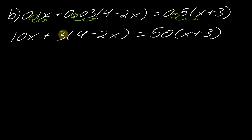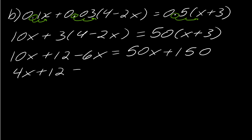So now I've got to distribute here and here, so I'll go ahead and do that. So this is 10x plus 12 minus 6x equals 50x plus 150. Now I can collect my like terms. So this is going to be, so 10x minus 6x is 4x, so this is 4x plus 12 equals 50x plus 150.